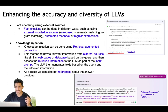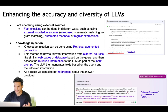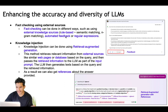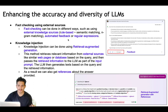Enhancing the accuracy and correctness of LLMs: the first is fact checking. Fact checking can be done in different ways such as using external knowledge — rule-based knowledge, semantic matching, or n-gram matching. For example, when an LLM gives an answer, we can look at web pages returned for a similar query and do semantic matching or n-gram matching. We can also ask for user feedback — like Bard asks for positive/negative feedback — and we can use regular expressions for rule-based matching.